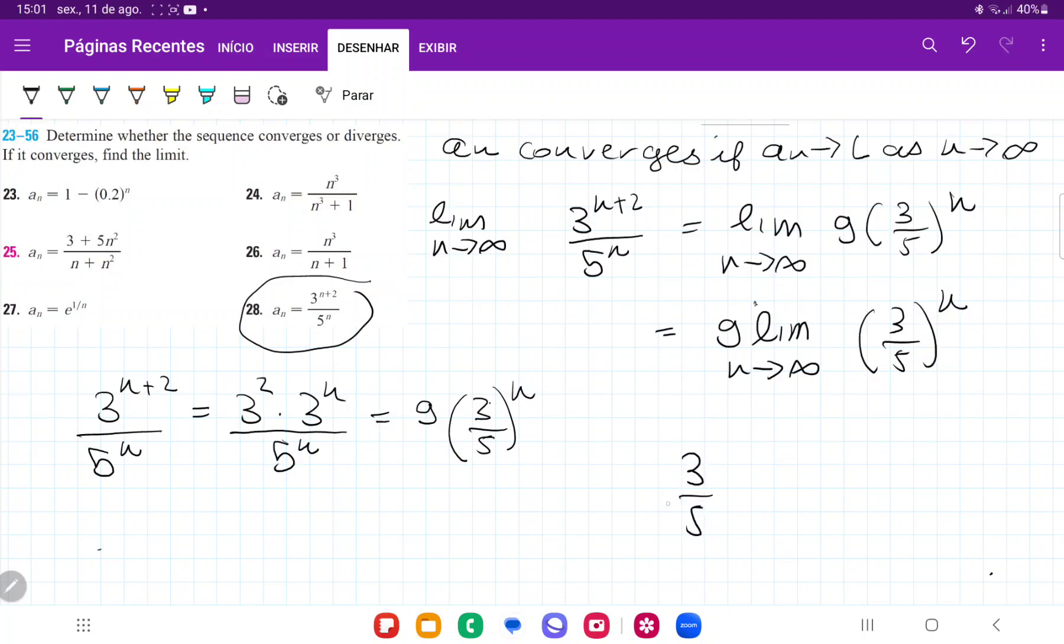And now, 3/5 is less than 1. Actually, I should put this less than the absolute value of 1. And what does this imply here?